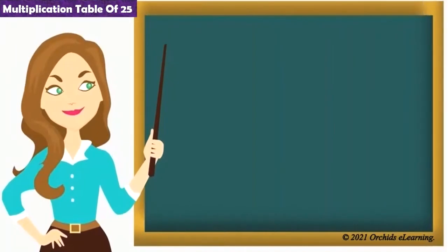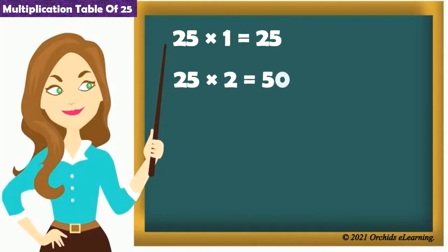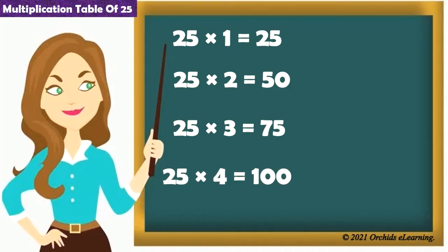25 1s are 25. 25 2s are 50. 25 3s are 75. 25 4s are 100. 25 5s are 125.